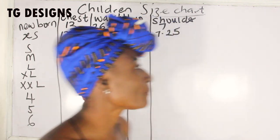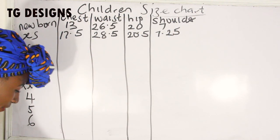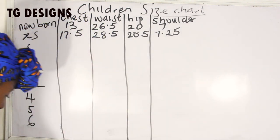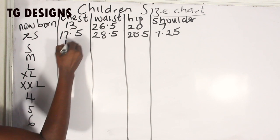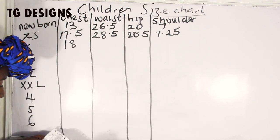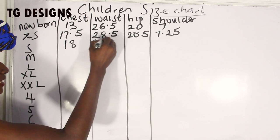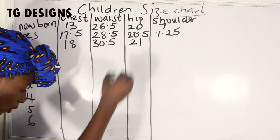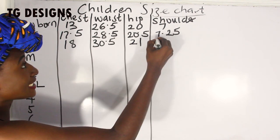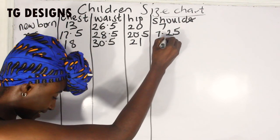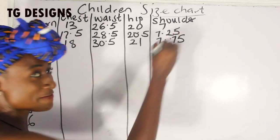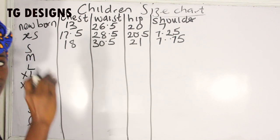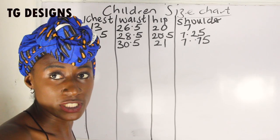The next size is X, which means small. The chest measurement for small is 18 inches, the waist is 30.5 inches, the hip is 21 inches, and for the shoulder we have 7.75 inches.